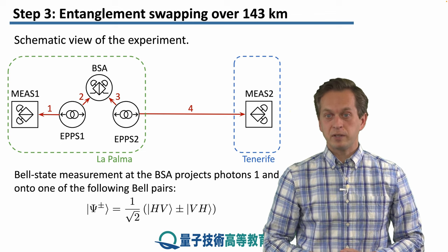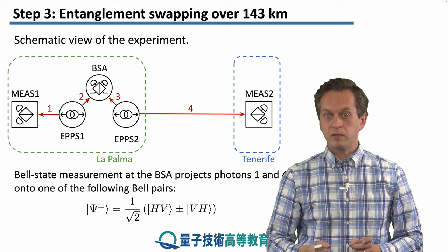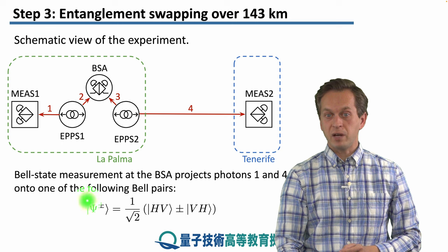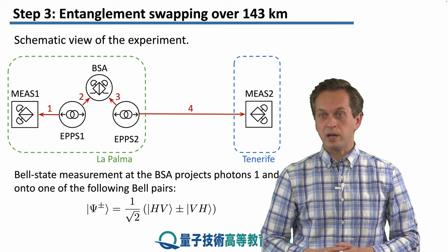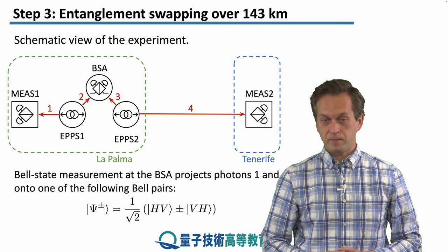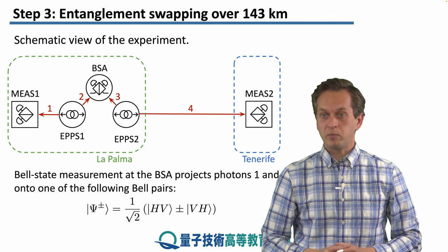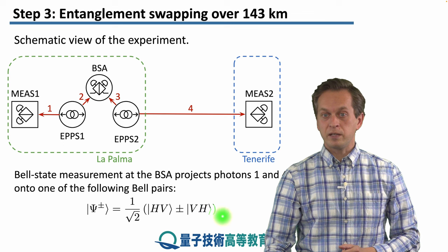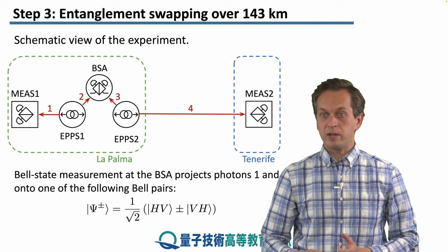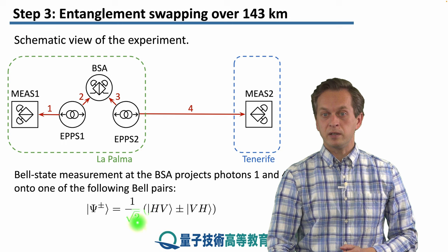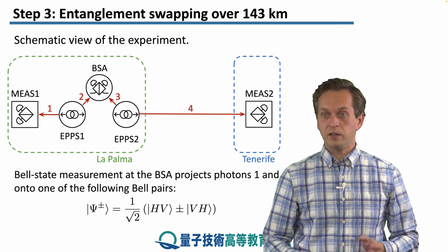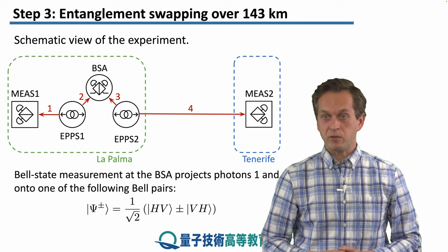The Bell state measurement at the BSA projects photons 1 and 4 into one of two possible Bell pairs: either a phi-plus state or a phi-minus state, depending on the measurement outcomes at the BSA. Since we are using polarization encoded qubits, the state is given in the polarization basis as an equal superposition of H⊗V and V⊗H for photons 1 and 4, where H is horizontal polarization and V is vertical polarization.